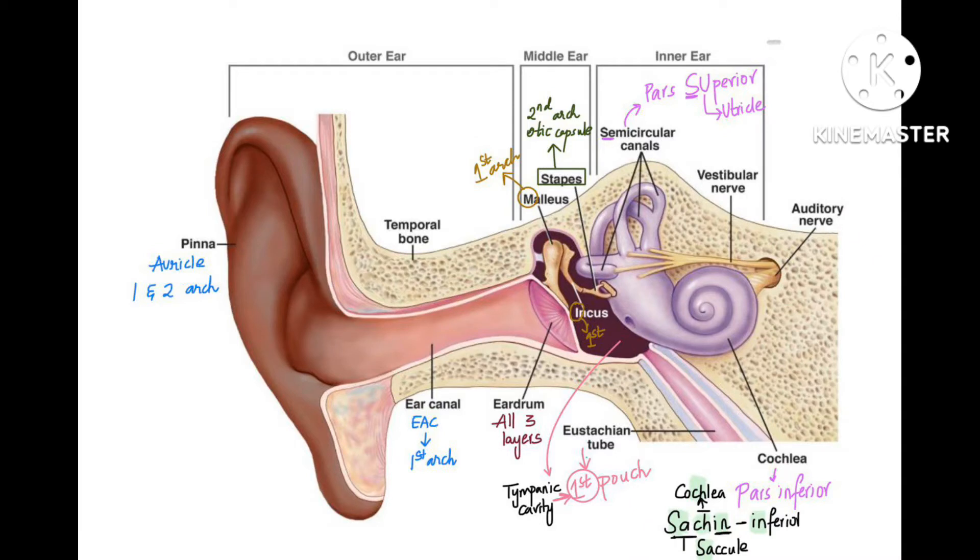Stapes is from second arch, and this middle ear cavity is called tympanic cavity. This tympanic cavity continues as eustachian tube, the pink one. The tympanic cavity and the eustachian tube both are derived from the first pouch. As I told you, when you go towards the inner side it becomes pouch. On the outer sides it is arches. So tympanic cavity and eustachian tube is from first pouch. Now the middle ear is over.